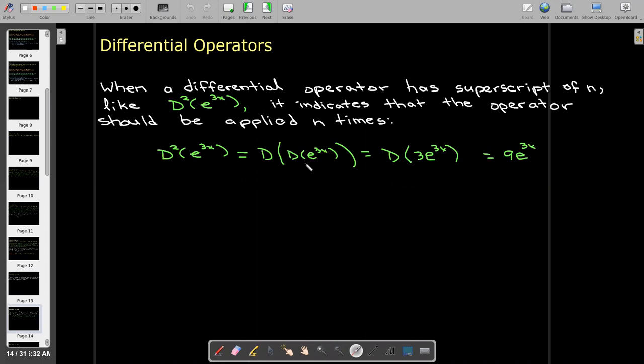And this is really the good way of thinking about it. We're going to take D of D of e to the 3x, which would be the equivalent to taking the second derivative.